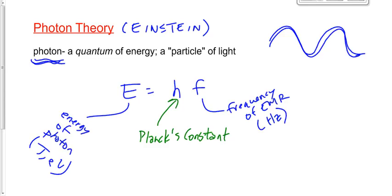So he gets a constant, Planck's constant named after him. Its value is 6.63 times 10 to the minus 34 joules seconds. Or it could also be 4.14 times 10 to the negative 15 electron volt seconds.